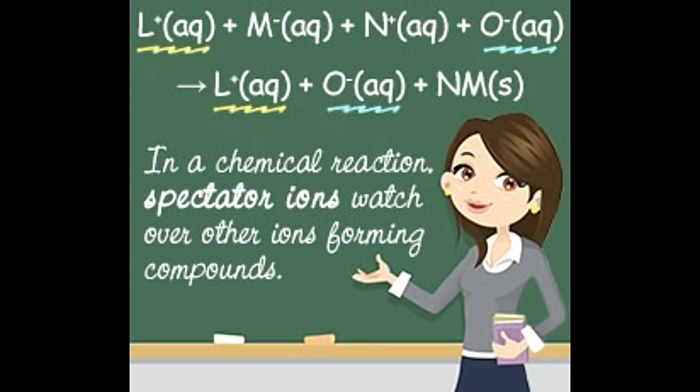Spectator ions, as the name suggests, are ions that play a major role when it comes to having equal charges on both sides of a chemical equation. This puzzle post tells you how to find these ions in a given chemical reaction. Spectator ions serve the purpose of balancing the charges of a reaction without affecting the equilibrium of the equation in any way.